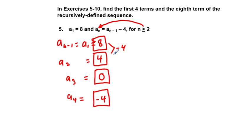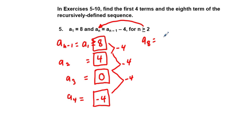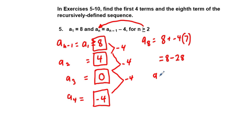As for a sub 8, we have a pattern — we're going down 4 every time. a sub 1 is 8. We can get a little formula: a sub 8 is going to be equal to our starting amount, which is 8, plus negative 4 times 7. We're going down 4 every time, and 7 times, because from a sub 1 that's 7 intervals. So we have 8 minus 28. Therefore, a sub 8 is equal to negative 20.